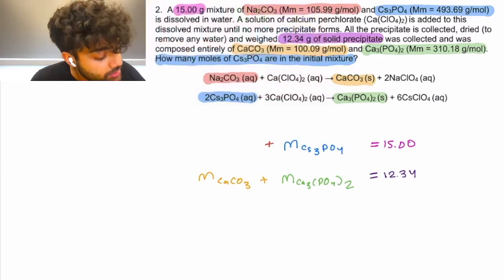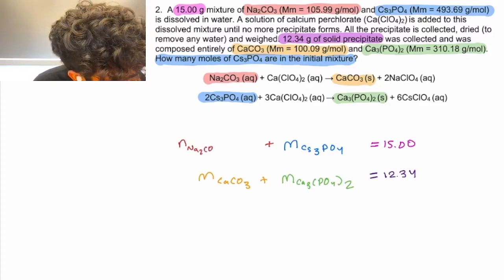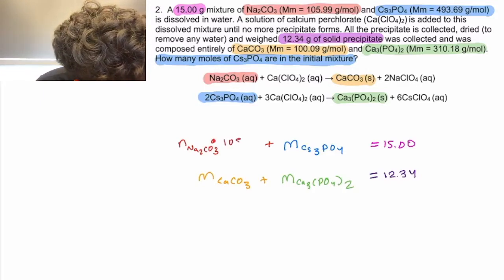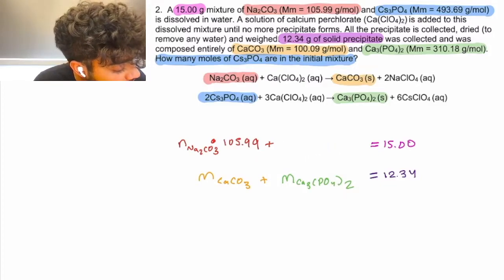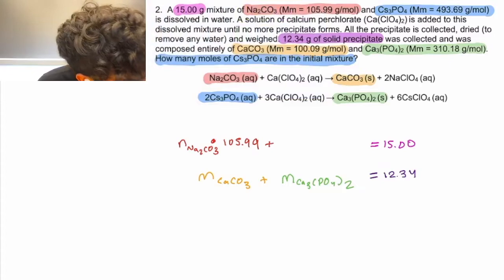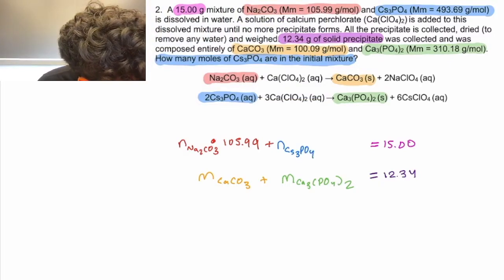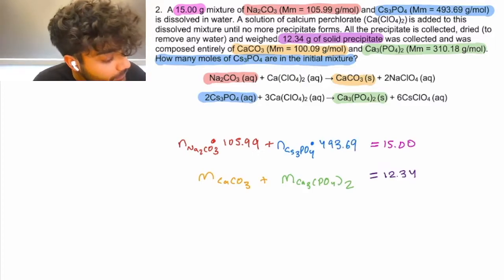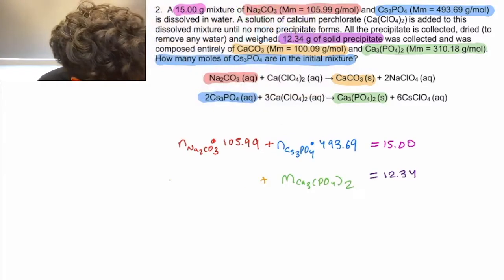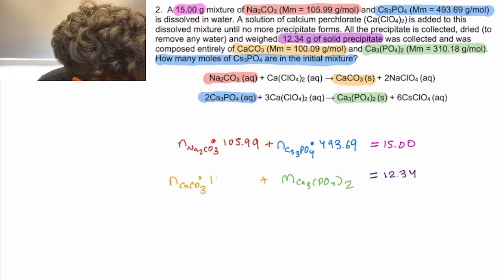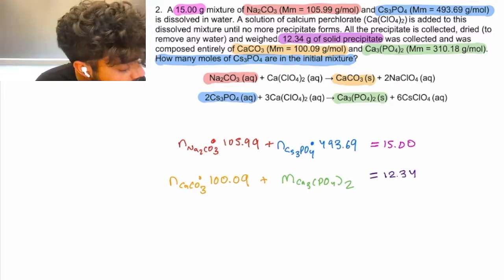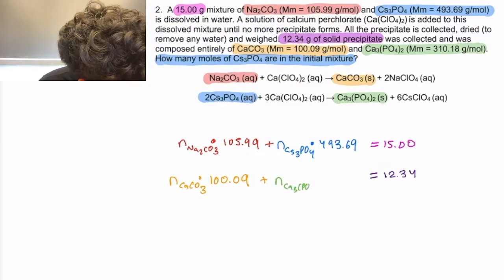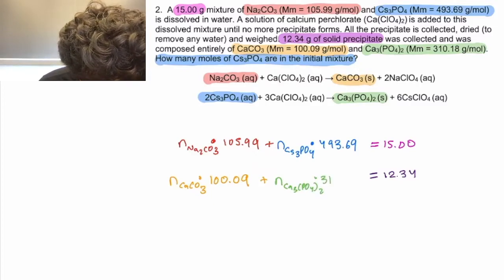For the mass of Na2CO3, that's also equal to the number of moles of Na2CO3 times its molar mass given in the red information as 105.99. Now, for the mass of CS3PO4, we want the moles of CS3PO4. Note that that's what we're solving for in the question times its molar mass, 493.69. For CaCO3, we're going to get the moles of CaCO3 times 100.09. And lastly, for Ca3PO4, we want the number of moles of Ca3PO42 times its molar mass of 310.18.